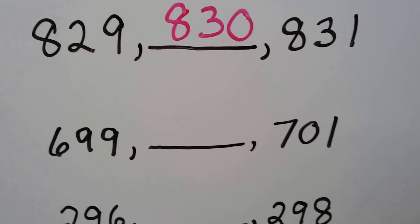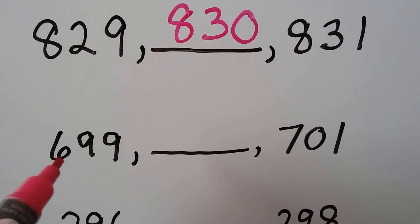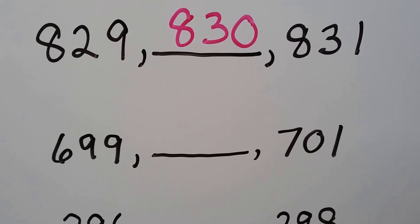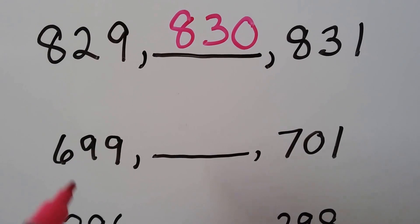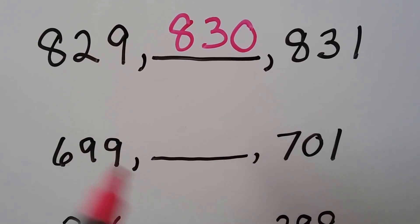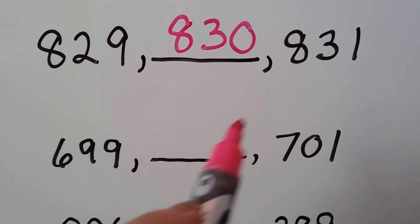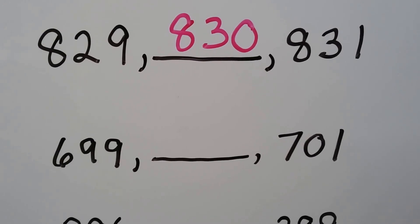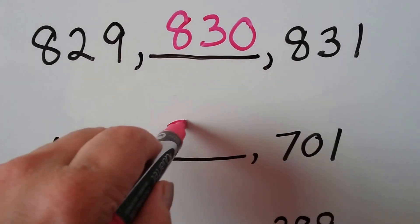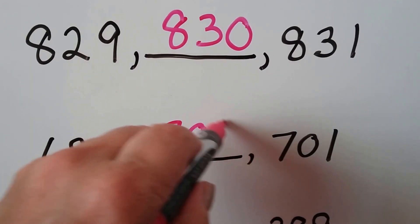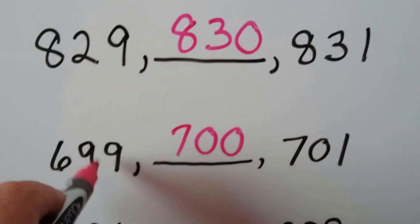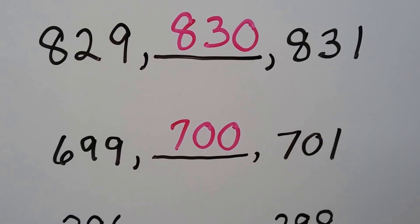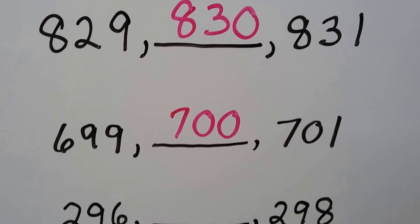What comes between 699 and 701? What comes after 699 and what comes before 701? If you said 700, you're right. It's 1 more than 699 and 1 less than 701. It comes right in between when we count.